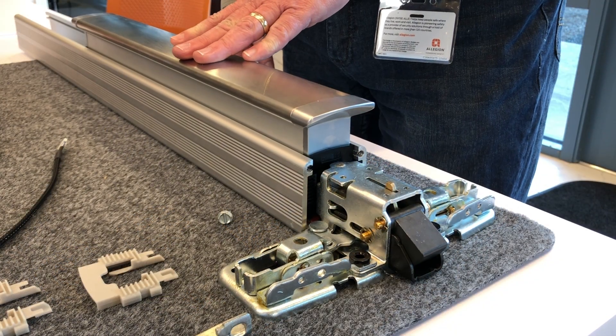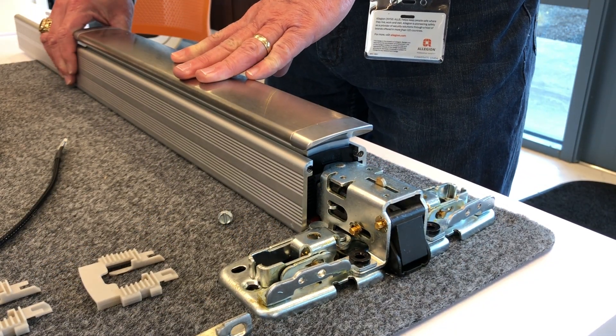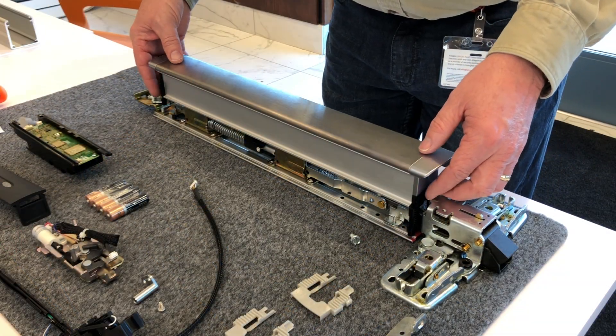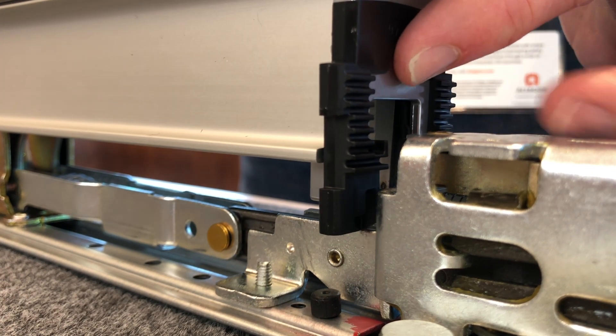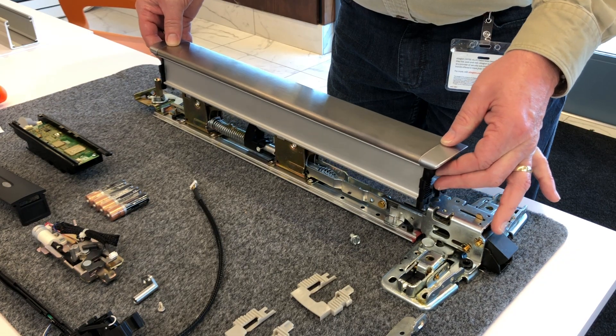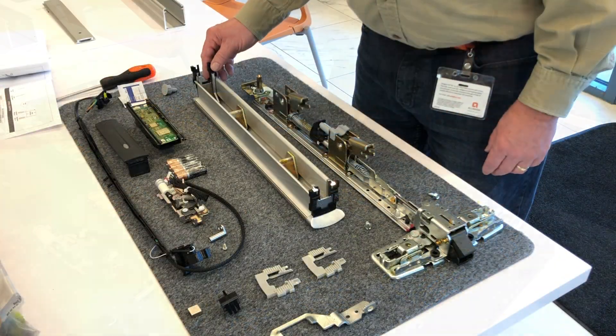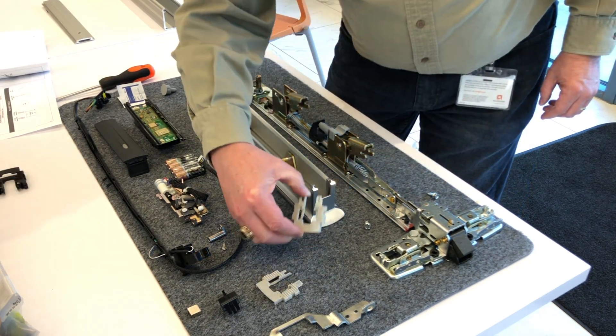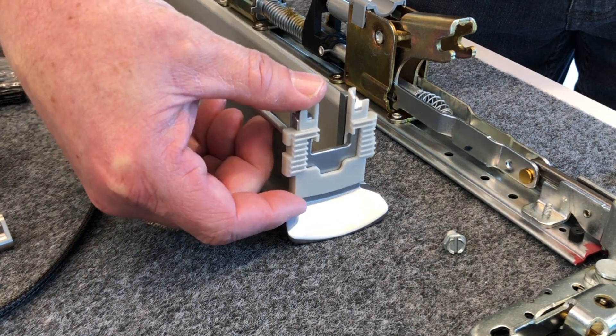Hold the pushpad down and slide the mechanism case off the device. Lift up the pushpad guides and carefully remove the pushpad and guides from the base plate. Remove and discard the two black pushpad guides and replace with the included gray ones.